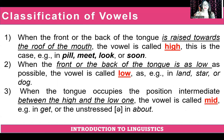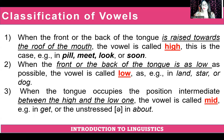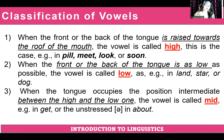When the front or back of the tongue is as low as possible, the vowel is called low, as in land, star, or dog. When the tongue occupies the position intermediate between the high and the low one, the vowel is called mid — for example, get and the stressed vowel in about.